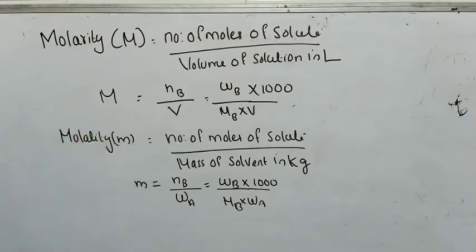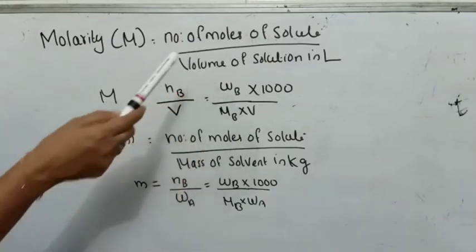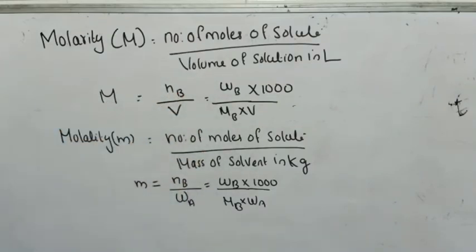If volume is given in milliliters, you have to convert that into liters by dividing by 1000. That 1000 will go up, so the expression for molarity will be: M = WB × 1000 / (MB × V). Here WB is the mass of the solute, MB is the molar mass of the solute, and V is the volume of the solution.